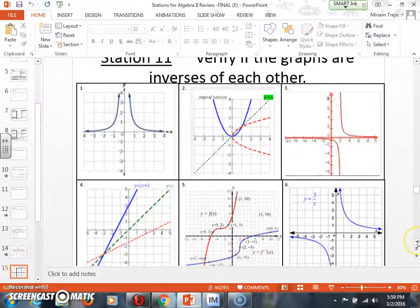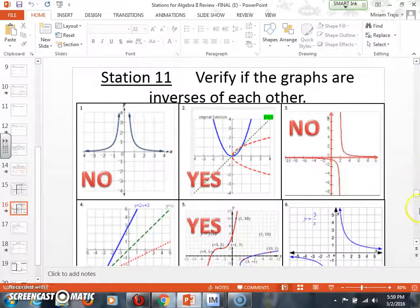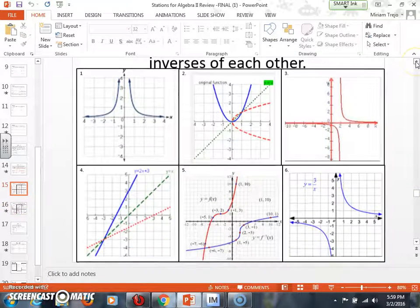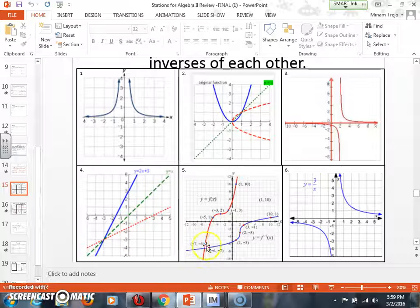Let's look at number four. If I looked at number four, and I have this dashed line here, does the blue graph look like the red graph? And the answer is yes. They are inverses of each other.